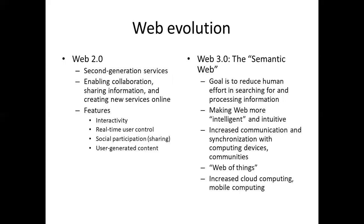Now comes the web evolution — that is how the web has been moving from one version to another. Web 2.0 is not the first generation; the first generation is Web 1.0. Web 1.0 was more of a static website — it was just there to inform you, for you to go and read the information. It was more static with nothing dynamic.